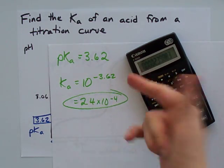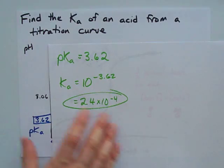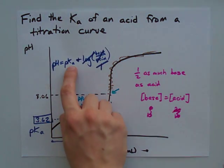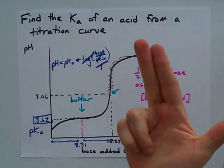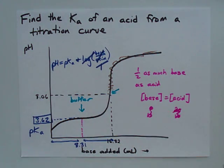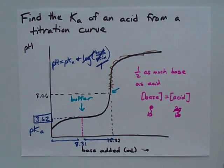And that's how you find the Ka of an acid from the titration curve. The pKa of the acid is the same as the pH, halfway to equivalence. Happy Halloween. Best of luck.